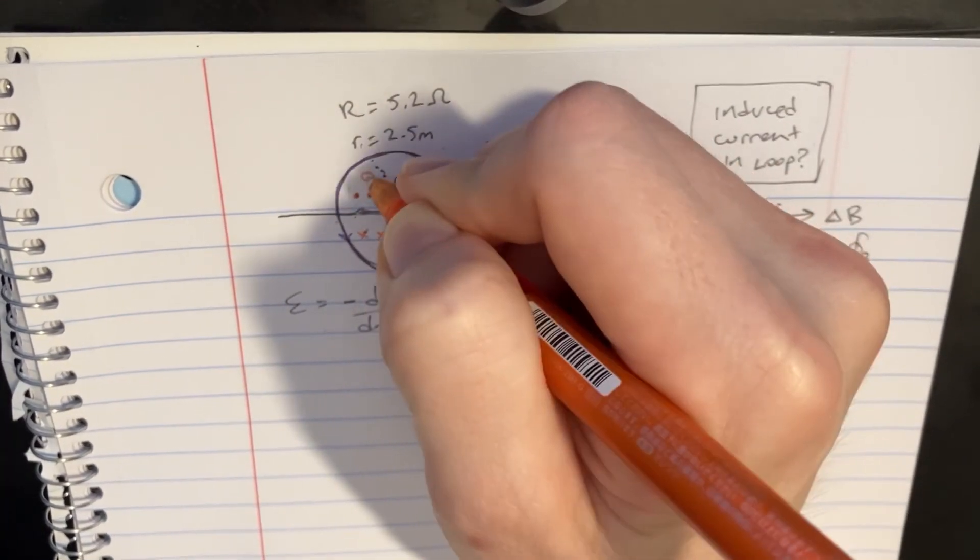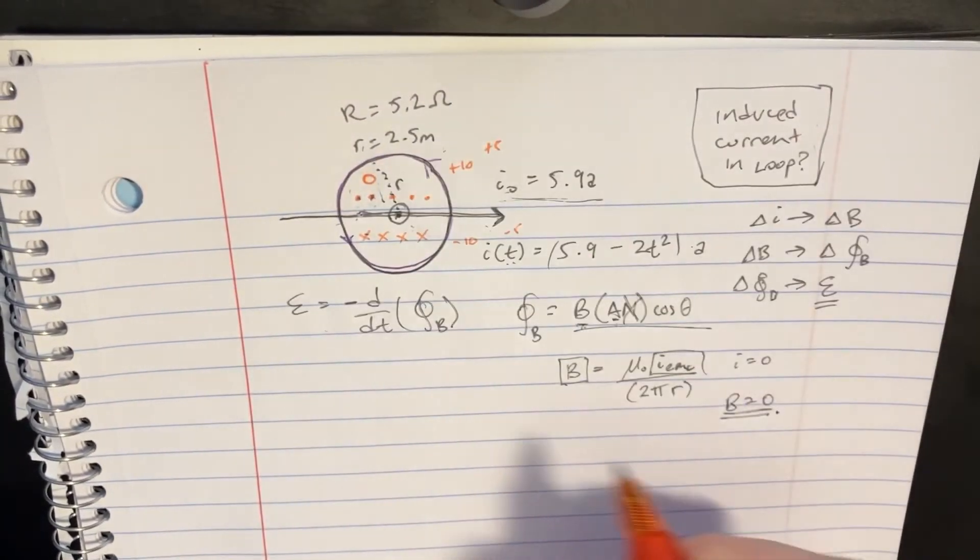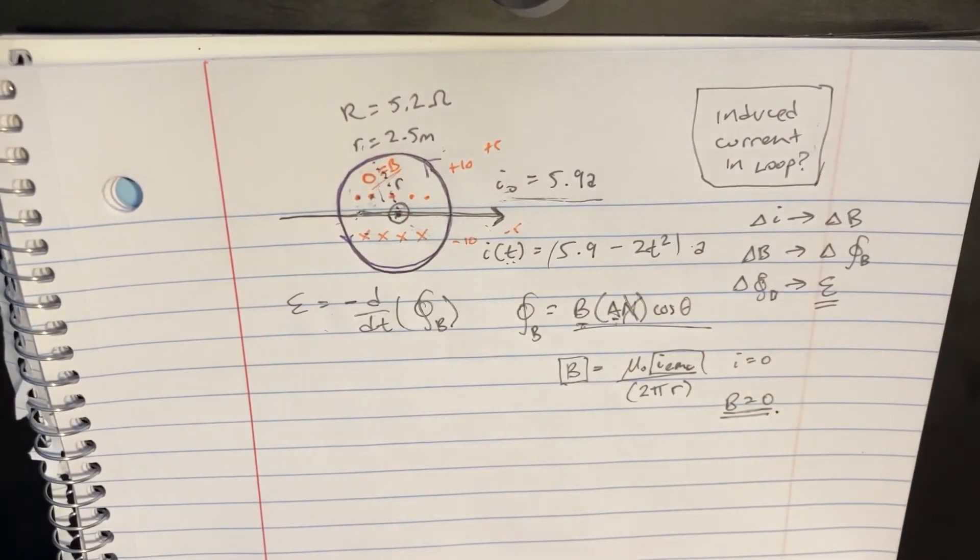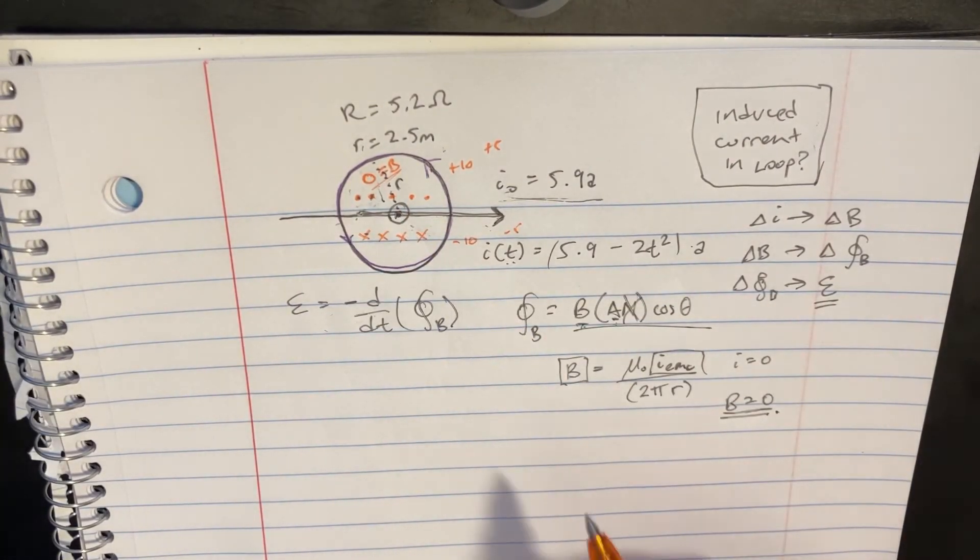And again, we would actually get 0 for the inside of here as being B. So that's another way we could figure out what that B is inside of there.